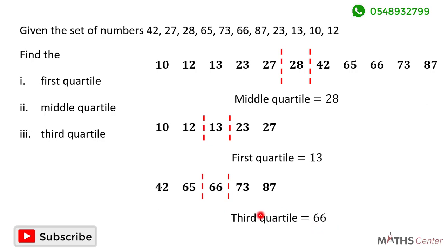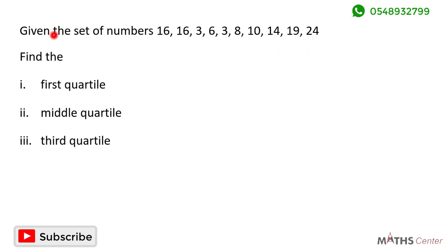Let's try another question. Given the set of numbers 16, 16, 3, 6, 3, 8, 10, 14, 19, 24, find the first quartile, the middle quartile and the third quartile.